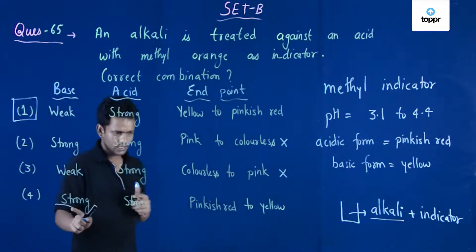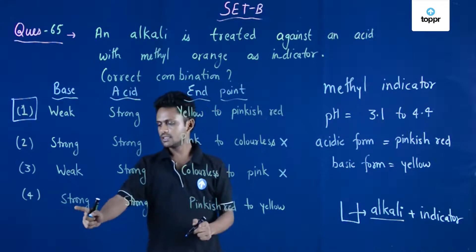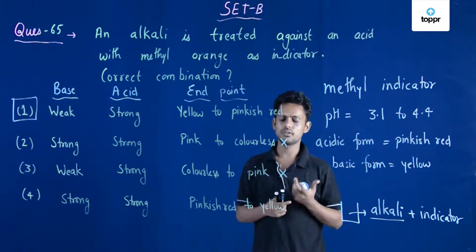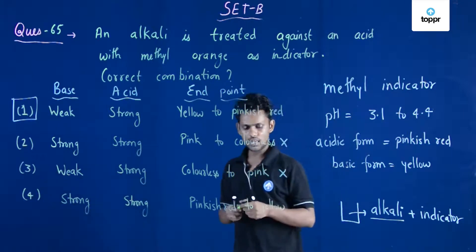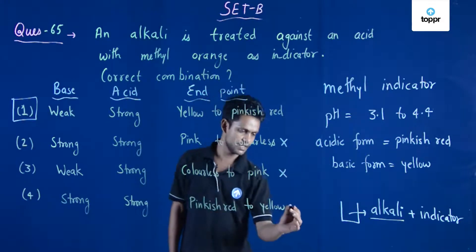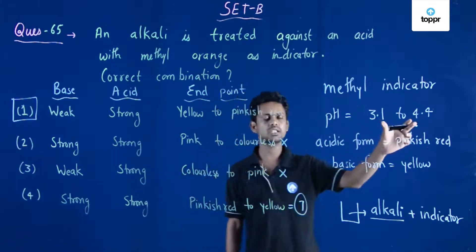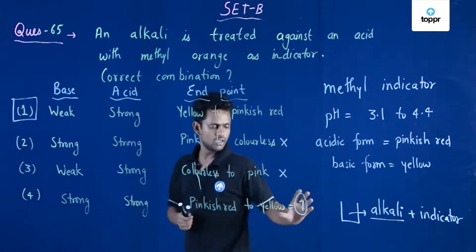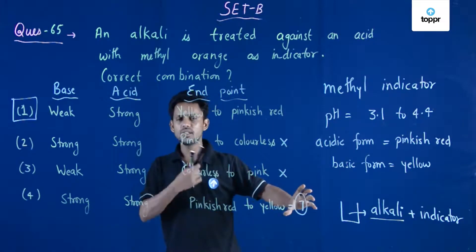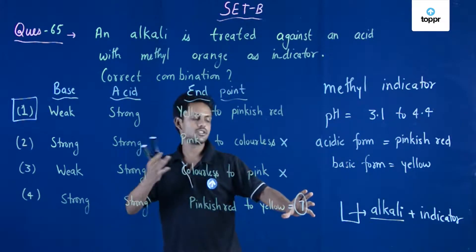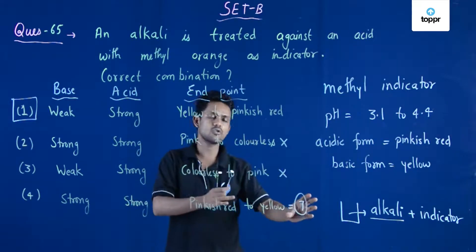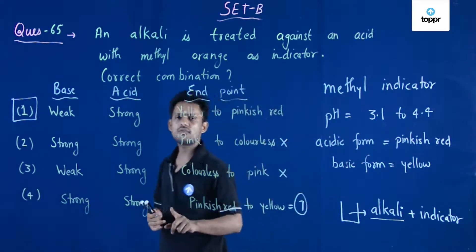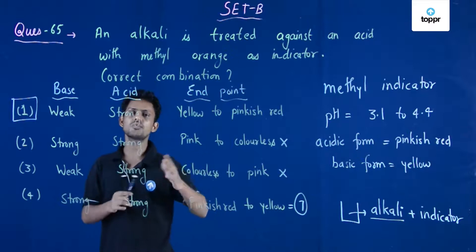If the option were pinkish red to yellow, that would represent a strong acid–strong base titration. For strong acid–strong base titrations we do not prefer methyl orange because the neutral point is around pH 7, which is too far from methyl orange's range of 3.1–4.4. We prefer phenolphthalein in that case, as its pH range of 8.3–10 is closer to 7.